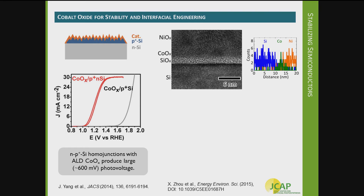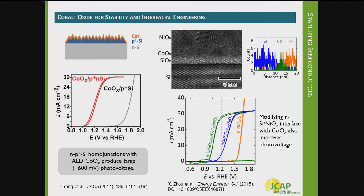Cobalt oxide has been a tool we've been using recently to improve the photovoltages of standard heterojunctions produced at very low temperature under moderate conditions. We're using silicon protected by nickel oxide, but instead of putting nickel oxide directly on silicon, we're creating a cobalt oxide interlayer just a few nanometers thick. The cobalt oxide actually changes the electronic properties significantly and improves the photovoltage of this heterojunction by about 200 millivolts, while avoiding the use of homojunction silicon solar cells.